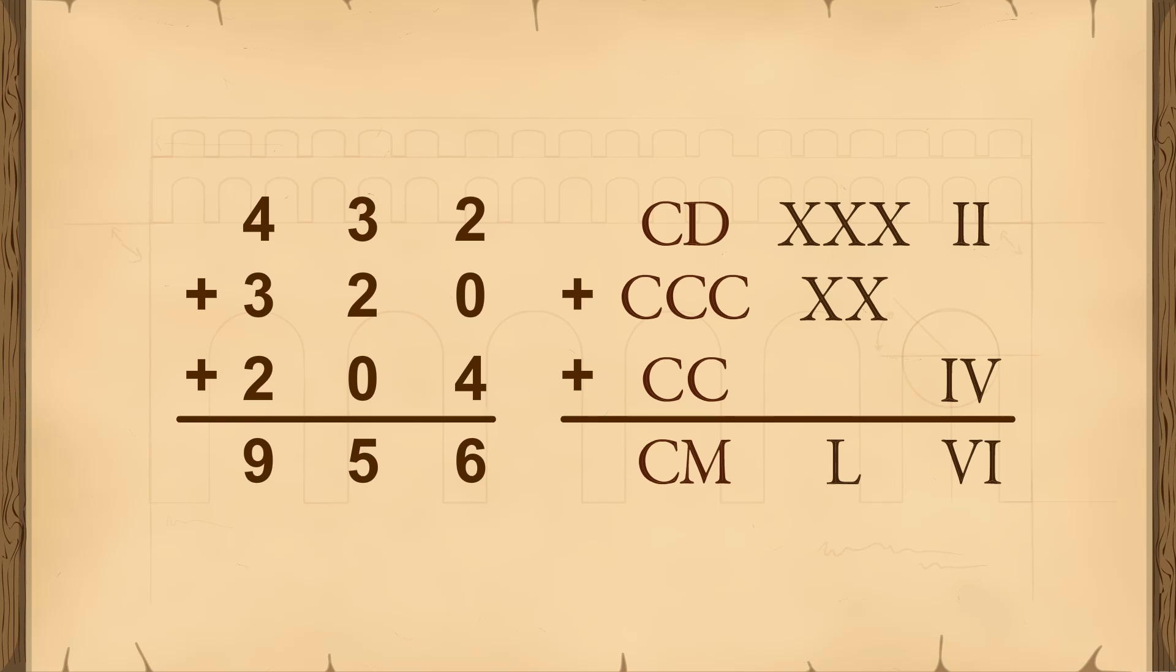The first difference that is apparent is that the Roman number system had no symbol for zero.